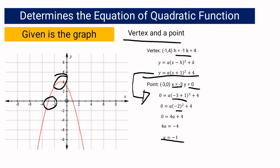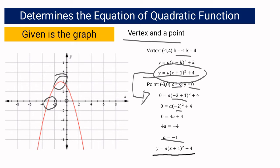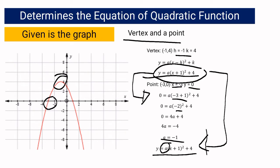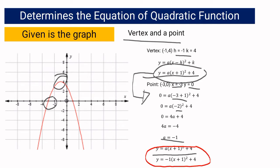We already have the value of a, which is negative 1. Substituting back, our quadratic function is y equals negative 1 times the quantity x plus 1 squared plus 4. This is our final answer: y equals negative 1 times the quantity x plus 1 squared plus 4.